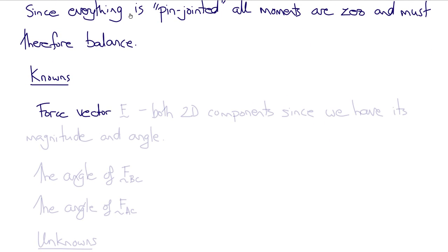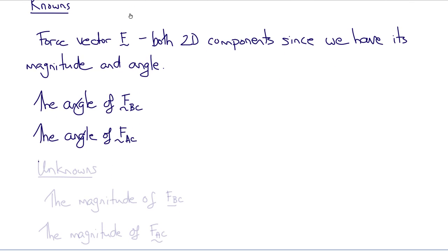So what do we know? Well, we know the force vector F, and we have both 2D components of the force vector, since we have its magnitude of 400 Newtons and the angle that it makes to the vertical axis. We also know the angle of the force BC and the angle of the force AC. What we don't know is the magnitude of the force BC or the magnitude of the force AC.